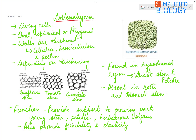Next, Collenchyma. These are living cells. They may be oval, spherical, or polygonal in shape. The walls are thickened; thickening is of cellulose, hemicellulose, and pectin. The thickening occurs in different ways, and depending upon the type of thickening, they are divided into three types.